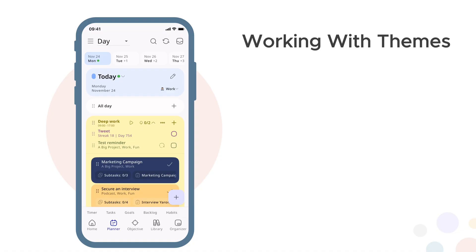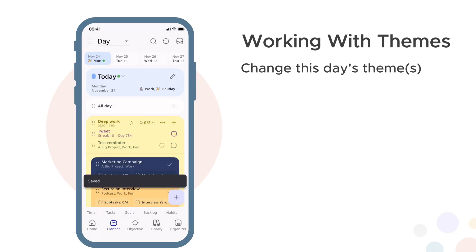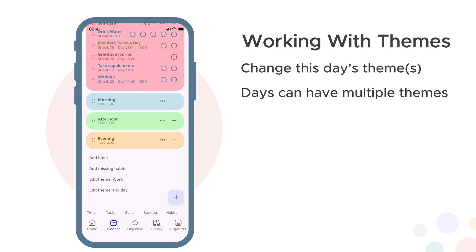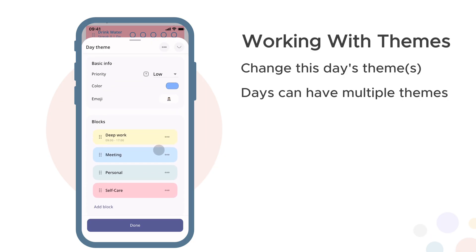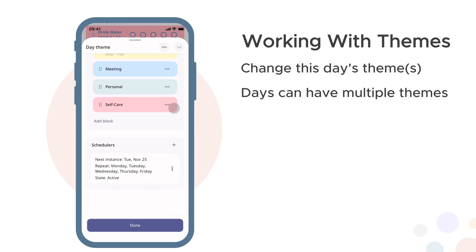Working with themes. Now that you understand themes and blocks, let's see how to work with them. To change a day's theme, tap the theme dropdown in day view. Select a different theme and that day's blocks update automatically. Days can have multiple themes simultaneously — maybe it's a work day but also a holiday, just select both. Want to edit the theme itself? Tap the edit theme button. This opens the theme editor where you can modify the blocks that appear on future days with this theme. You can change the theme's priority, colour or emoji, and add or remove blocks from the default set. These changes affect all future days using this theme.